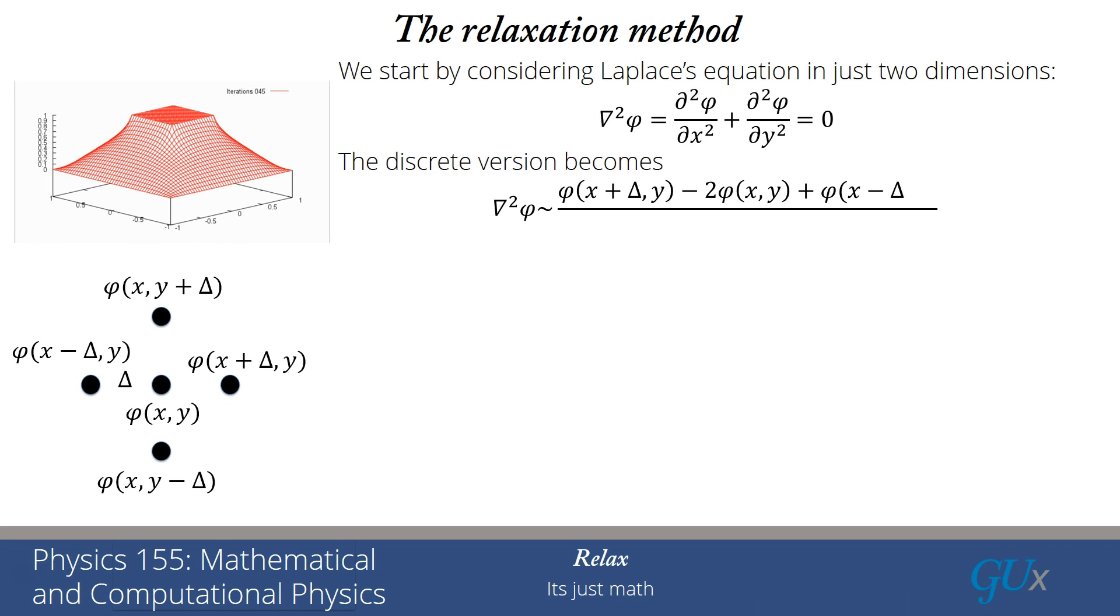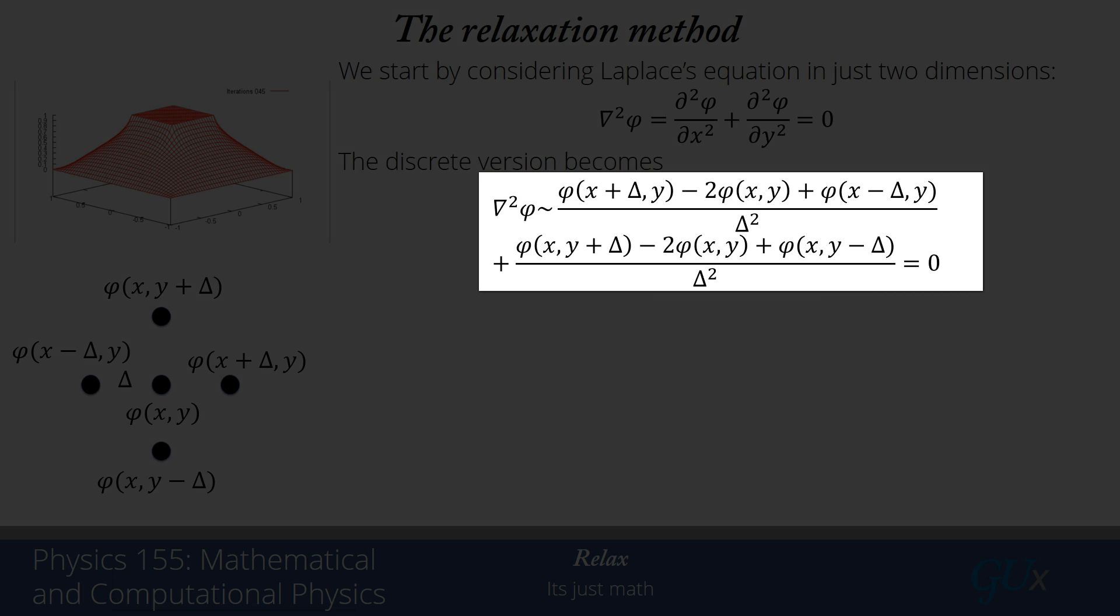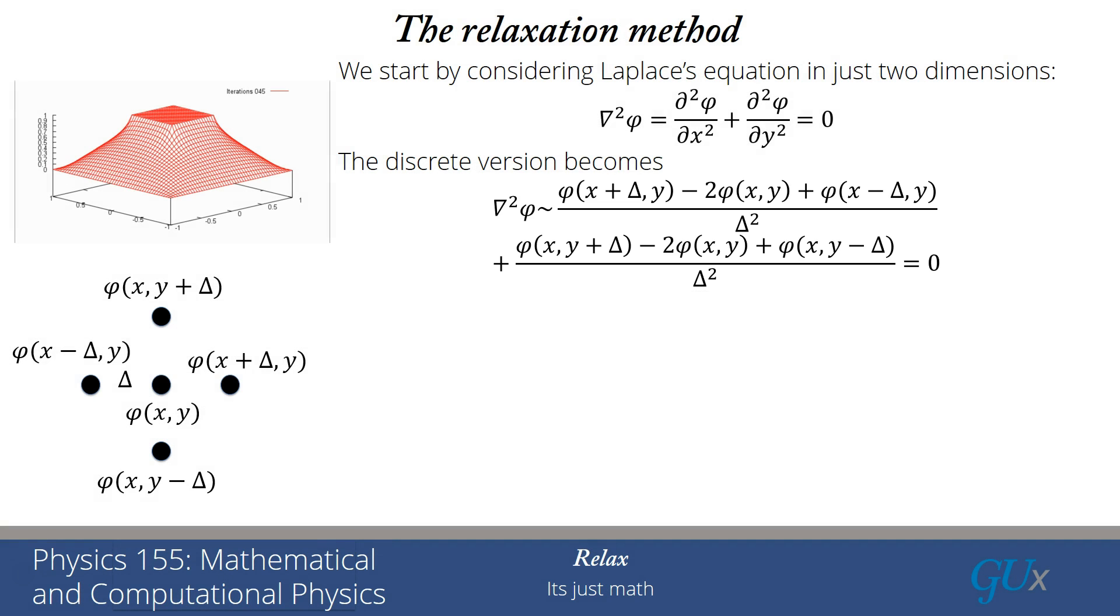So we now need to work out what is the second derivative in terms of those objects. Now if you've seen this before, this formula will look pretty obvious to you. In the x direction it would be phi of x plus delta, y minus 2 phi of x,y plus phi of x minus delta, y divided by delta squared. And then a similar formula in the y direction where now it's y that gets shifted by delta or by minus delta. But you might not really have seen that formula before. So let me show you a quick and dirty way to derive that.